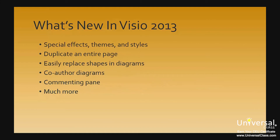Special effects, themes and styles — the same effects, themes and styles you love in other Office programs are now available in Visio. You can now duplicate an entire page by right-clicking on the page tab and selecting Duplicate. Easily replace shapes in diagrams using the new Change Shape gallery under the Home tab. Co-author diagrams as a team using SharePoint or OneDrive. Use the commenting pane to comment on diagrams — comments show as threaded conversations, and much more.